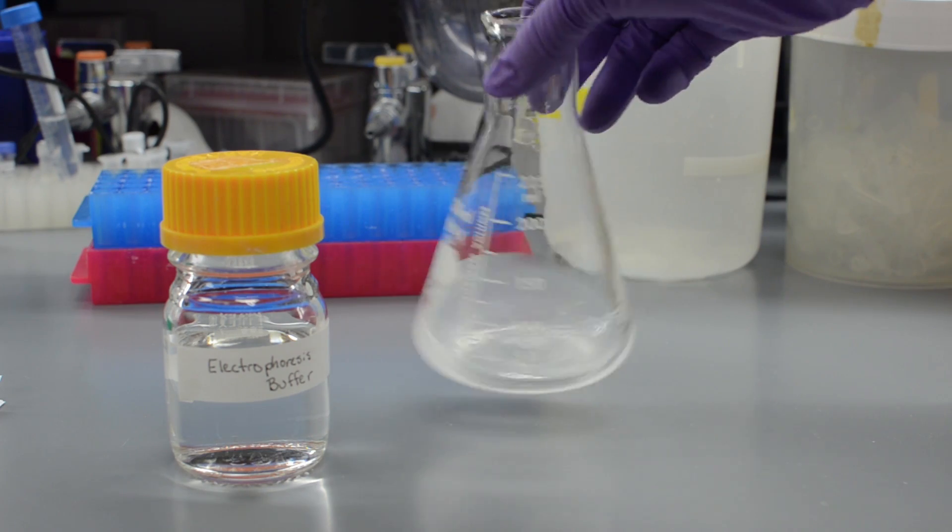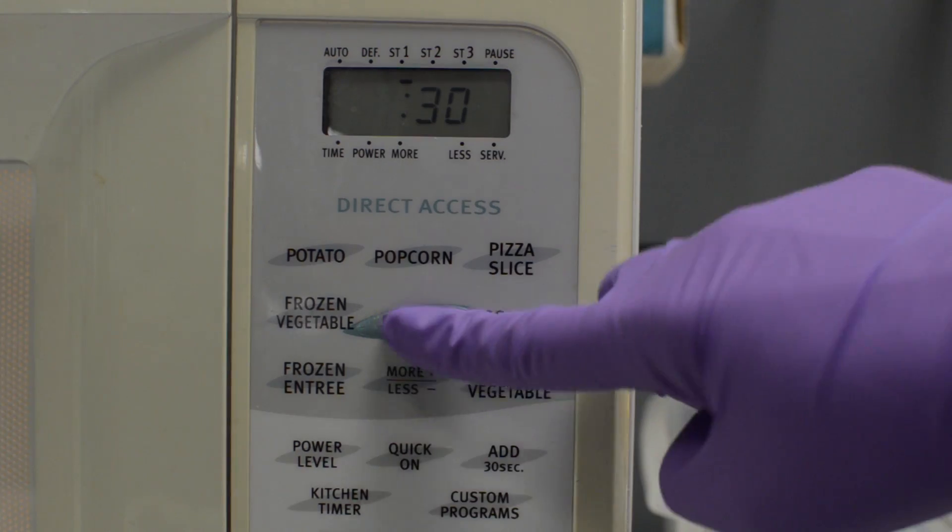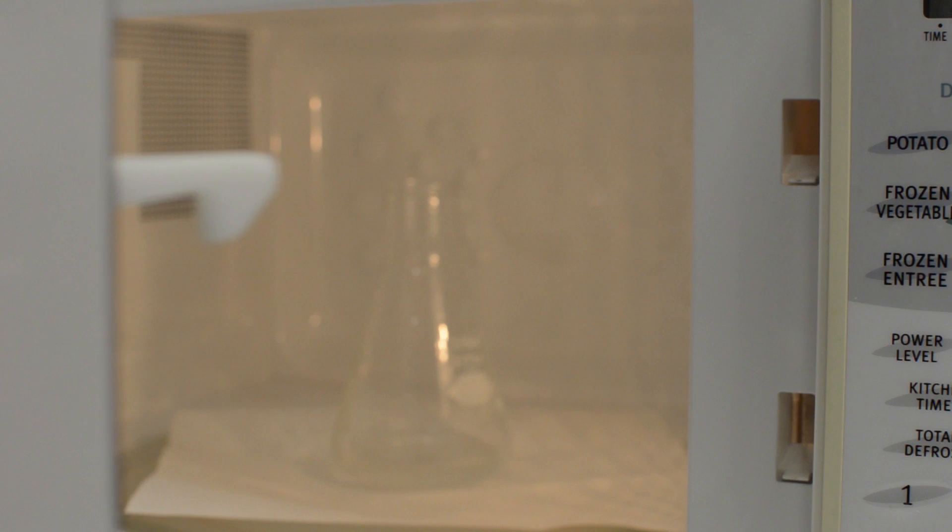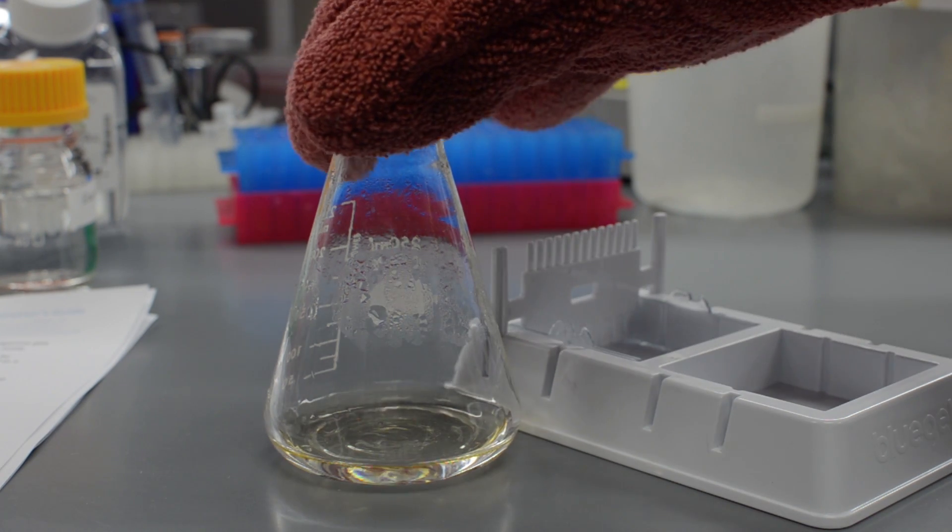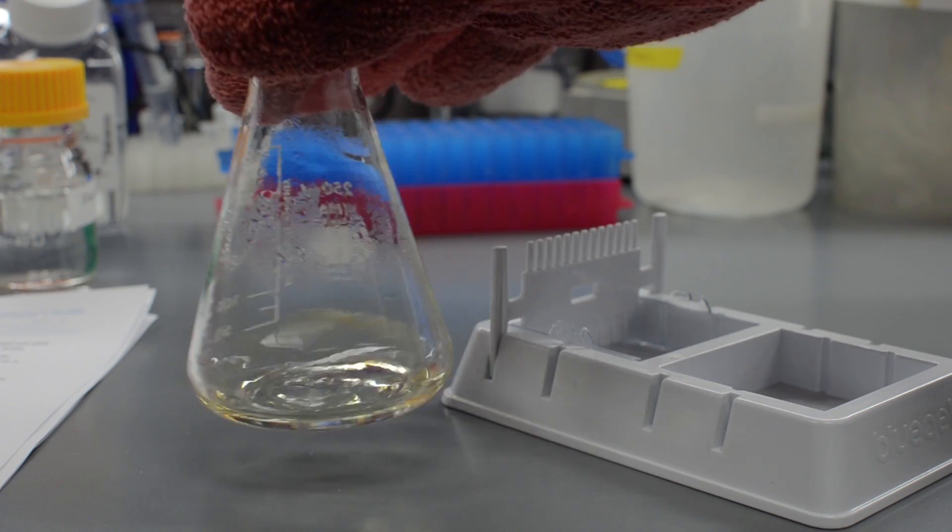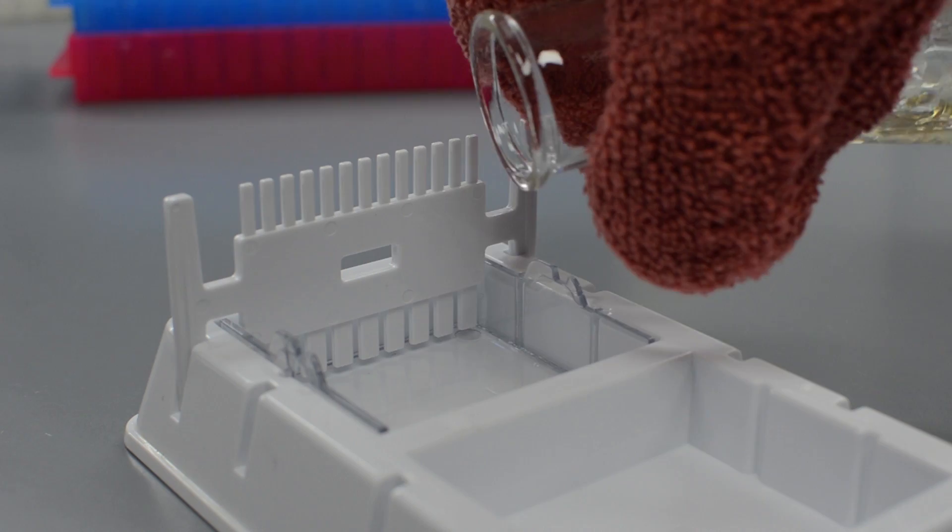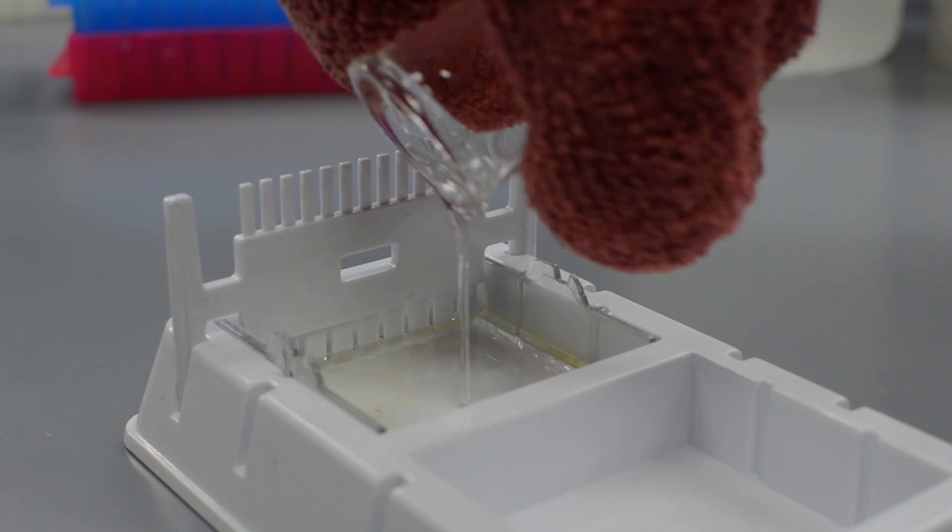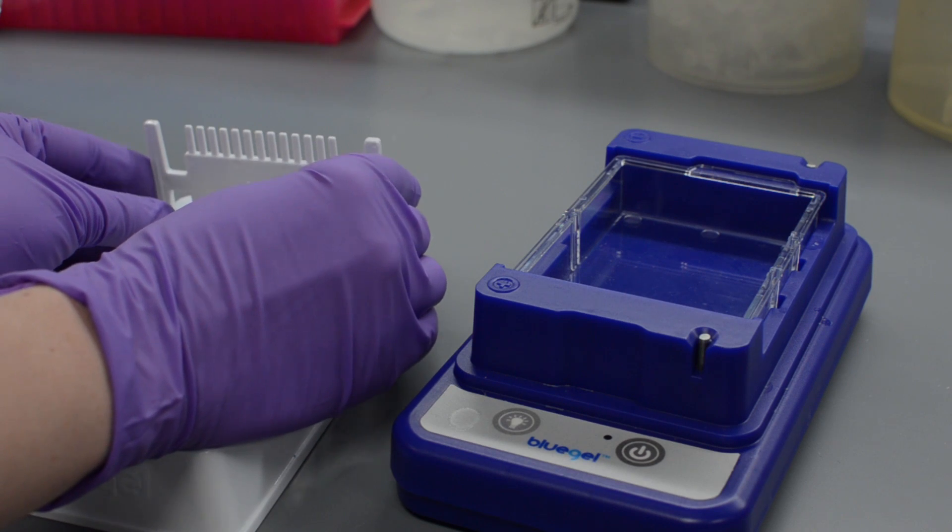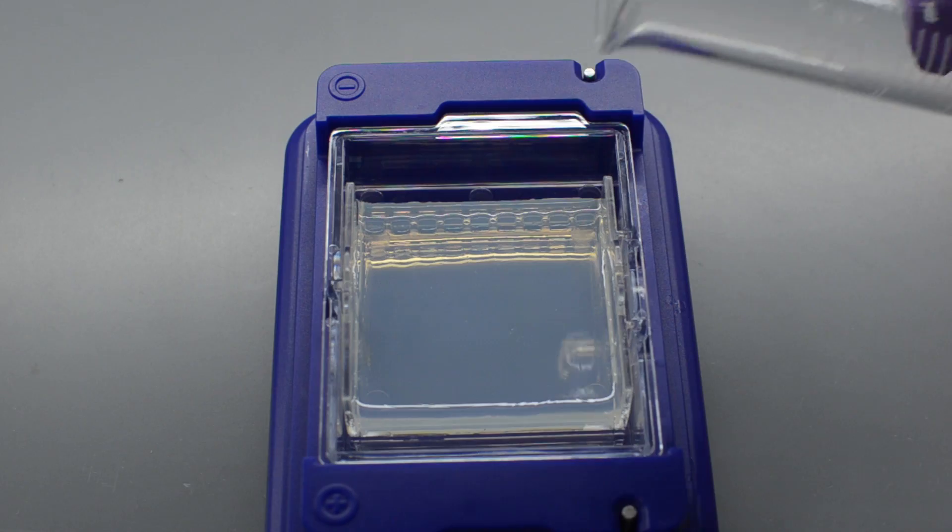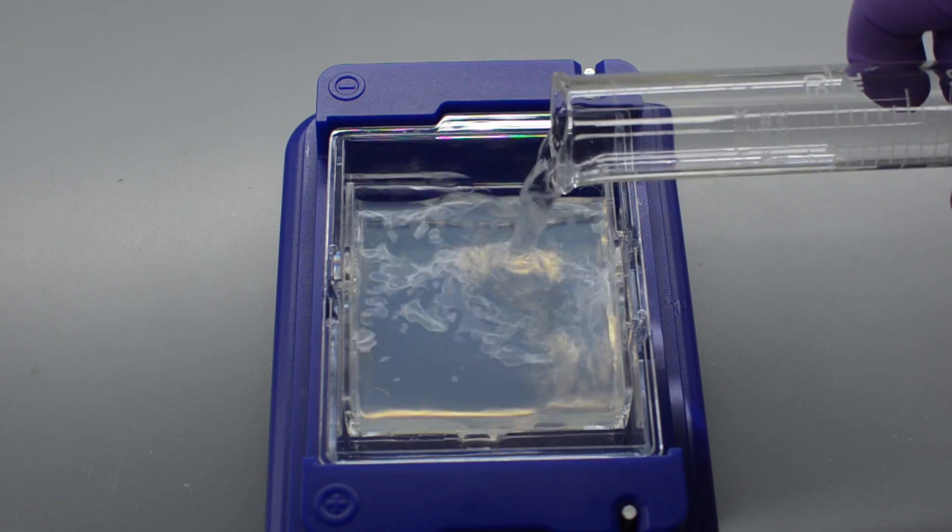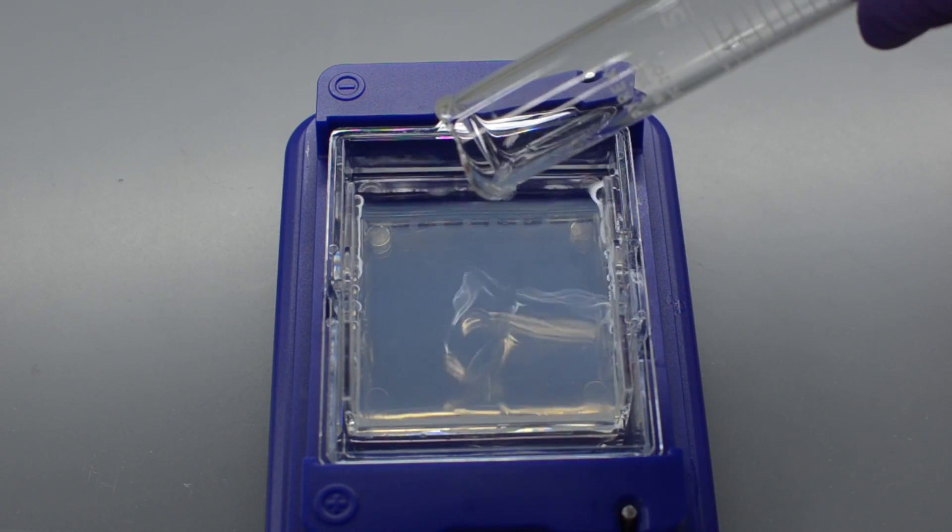We'll mix our agarose powder with a buffer and microwave it to fully dissolve the powder. Once it's all mixed and cooled slightly, we'll add a dye that will combine with the DNA that we run through our gel and allow us to visualize it on a special blue light box a little later. We'll pour the gel into our casting tray and let it set. Once our gel is set, we'll remove the comb, transfer the gel to our gel box, and fill the box with more buffer. This buffer contains salts that help conduct electricity through our gel.